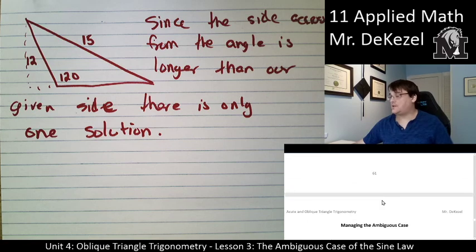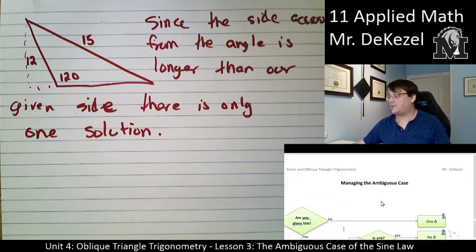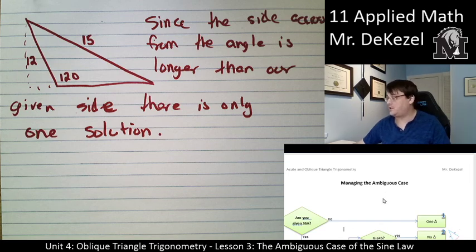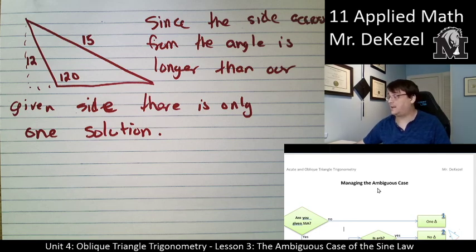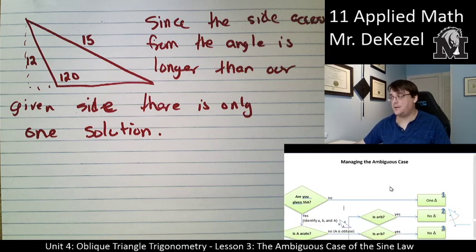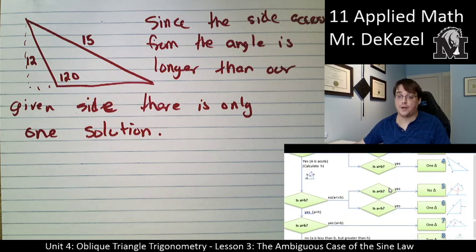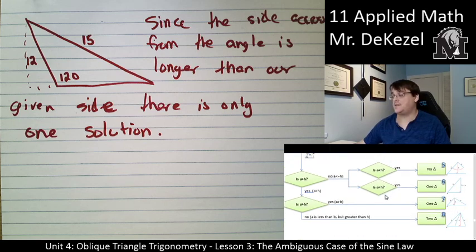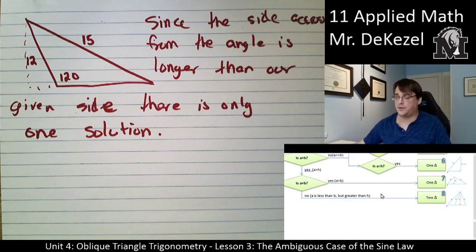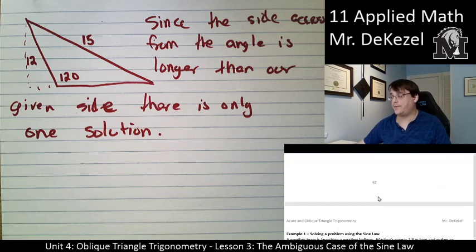I'd like you to check out a really cool flowchart about managing the ambiguous case — what you need to do at each step. I'd love to go over it in class or personally if you like. If you have questions about it, please let me know. I'm not going to go over it here, but it is a very helpful flowchart once you understand what we're doing.